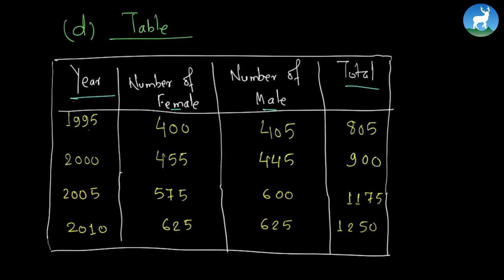Now the fourth kind of chart is called a table. In a table we have different kinds of information shown in vertical columns. For example, we have year and number of female and male students and total population of a given city.